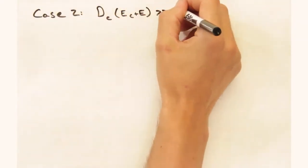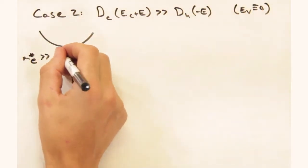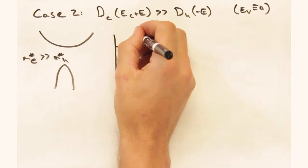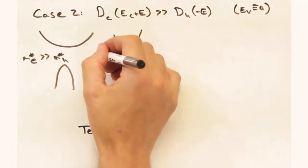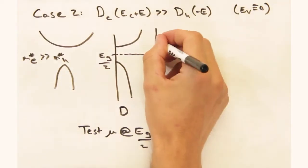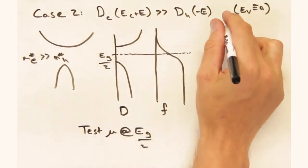What about if my conduction band density of states was a lot larger than my valence band? You're saying that the conduction band edge has a larger band mass. Exactly. A really heavy conduction band edge. So for the moment, let's keep our Fermi level in the center of the gap. And over here, let's plot the product of d and f.